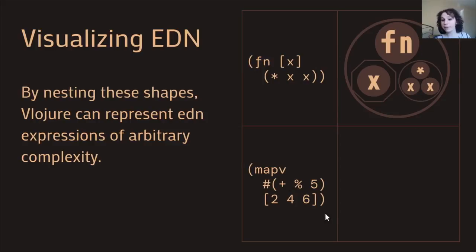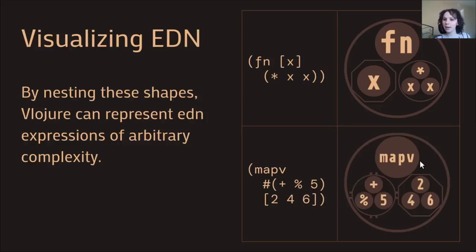Here we have another example of a ClojureScript expression calling the map-v function on two arguments, and here's what it looks like in Vlojure. The function literal syntax fits in very nicely — just a circle with lines coming out of the side — and you use the normal percentage sign symbol inside to reference the argument.